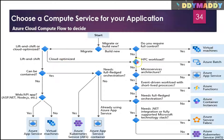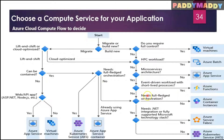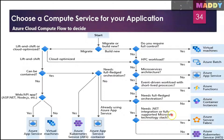This covers the lift and shift and cloud optimized side. If you think about HPC workloads, microservices, or event-driven workloads where a trigger runs some code or function, then we look at serverless technology which is Azure Functions. For full orchestration with container services, if you need a .NET integration fully supported by the Microsoft technology stack, you would use Azure Service Fabric; otherwise you end up with Kubernetes Services — AKS.